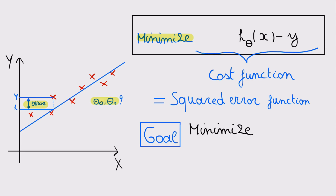We will express this minimization problem with a formula. We want to minimize the total error over all training examples by taking the sum of every error between the hypothesis value and the real value of y, summing from 1 up to m, which is the total number of training examples. We square the error so that all errors are positive and can be summed up. We also add a term 1 over m to take the average error, and a term 1 over 2, which is a constant to make the upcoming math a little easier.